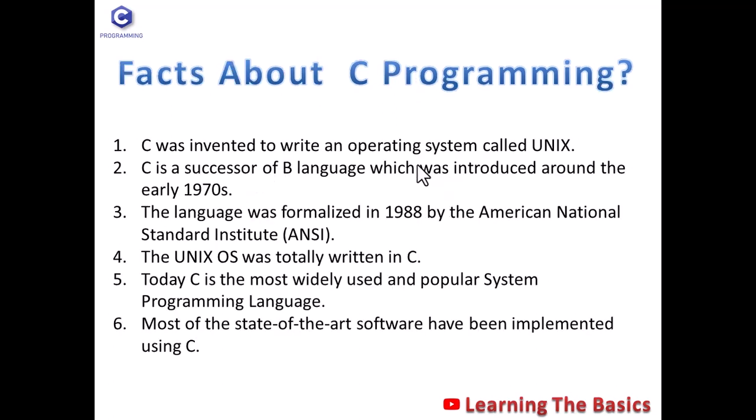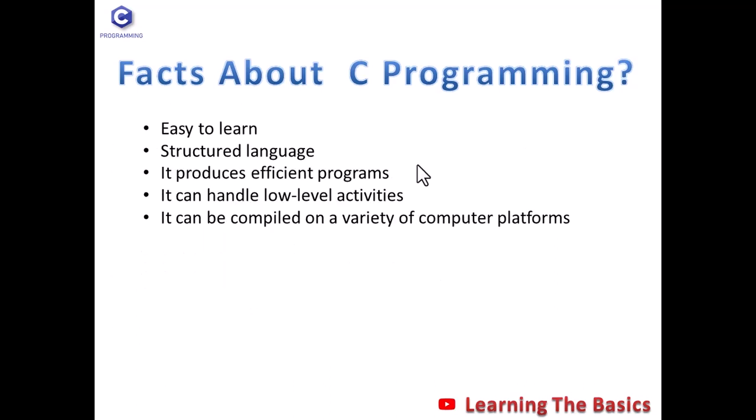Facts about C programming: C was invented to write an operating system called Unix. C is a successor of B language, which was introduced around the early 1970s. The language was formalized in 1988 by the American National Standard Institute. The Unix OS was totally written in C. Today, C is the most widely used and popular system programming language. Most state-of-the-art software has been implemented using C. C is easy to learn, it is a structured language, it produces efficient programs, and it can handle low-level activities.